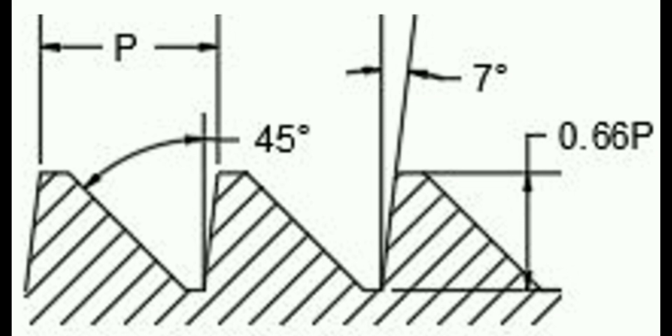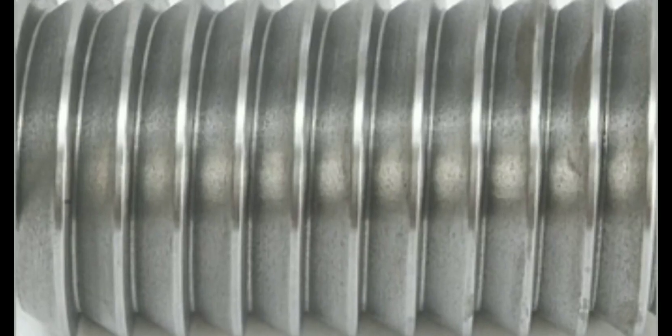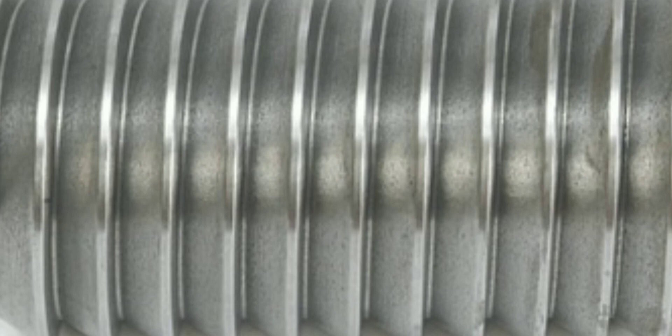This asymmetric design provides high resistance to axial force in one direction while allowing for smooth engagement and disengagement. Buttress threads are commonly used in applications where there is a need for efficient transmission of axial force in one direction while allowing for easy assembly and disassembly.